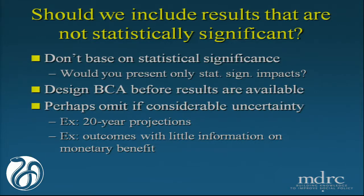Even the result that is not significant — if you look at the distribution of effects, there's a 90.9% chance that they're positive, a 91% chance that this intervention saves money. So why wouldn't you be interested in implementing that, even though the result is not statistically significantly different from zero? I was struck by Margaret's question: should we include results that are not statistically significant? From the perspective of somebody who thinks about this statistically, absolutely you should — if they're the right results. Statistical significance is not the thing you should be focusing on. It would be like doing an impact analysis and saying we're only going to present the results that are statistically significant — nobody would ever do a study like that.